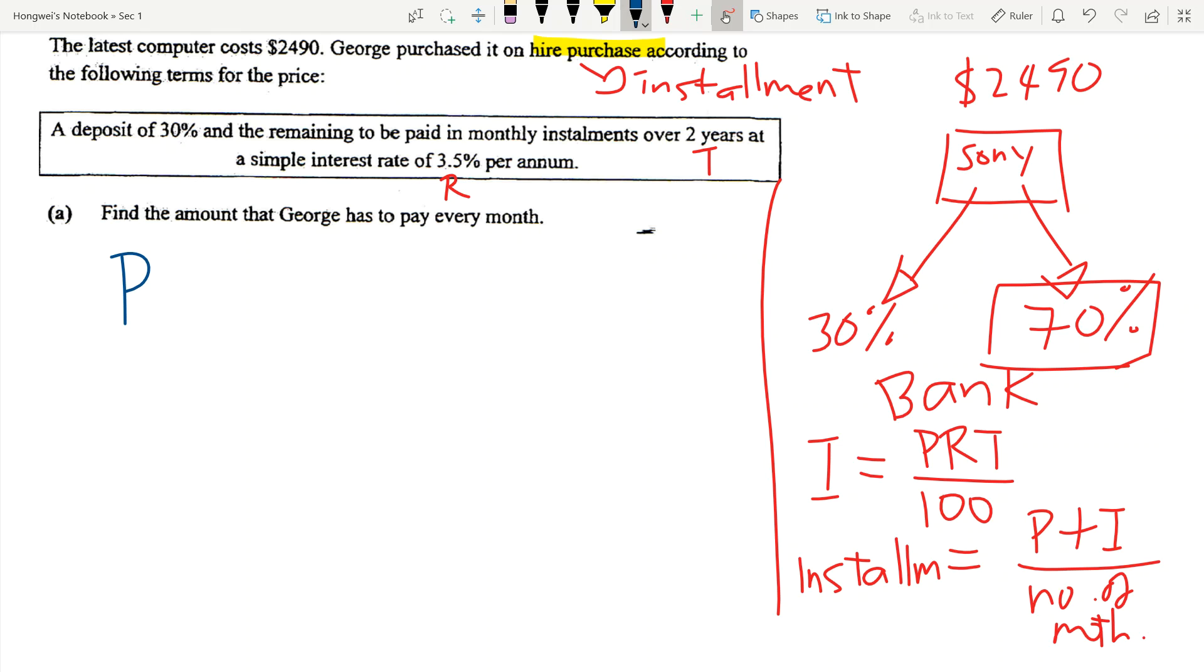So my principal equals 70/100 times 2,490. You know that during the equation I will never write my units. Units are not to be written in the equation. Units are only written as the final answer. So today I borrow $1,743 from the bank. The amount that I've borrowed from the bank is called the principal. So I put it into my simple interest formula.